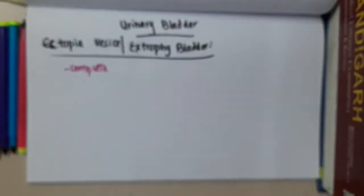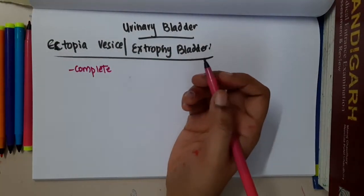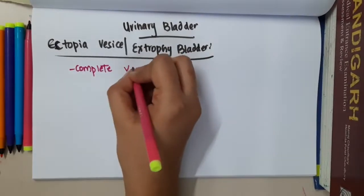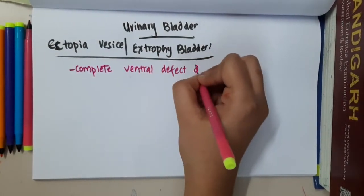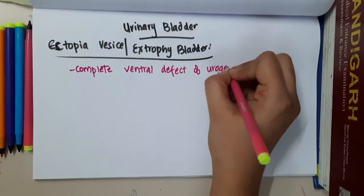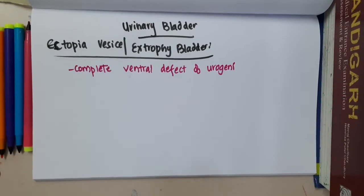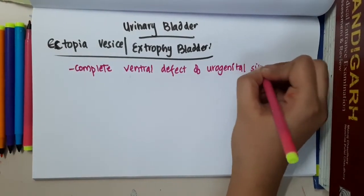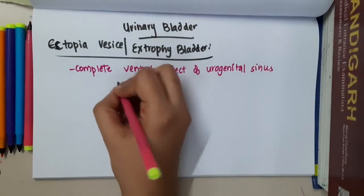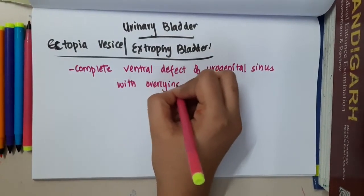Hello friends, let us now learn some important points about ectopia vesicae and exstrophy of bladder. Exstrophy of bladder, also called ectopia vesicae, is a complete ventral defect of the urogenital sinus with the overlying skeletal system.